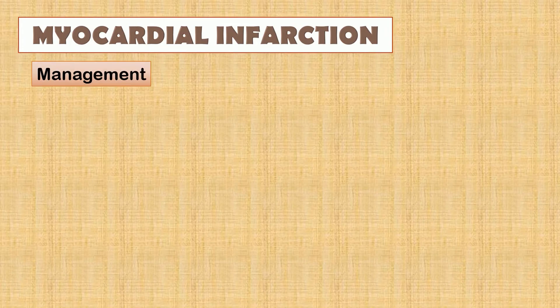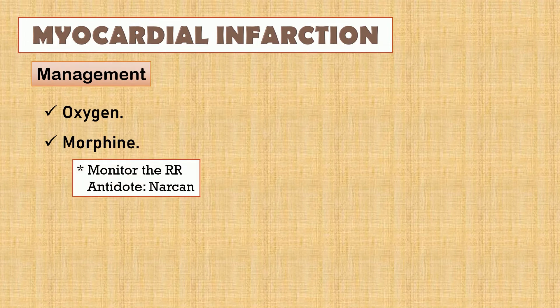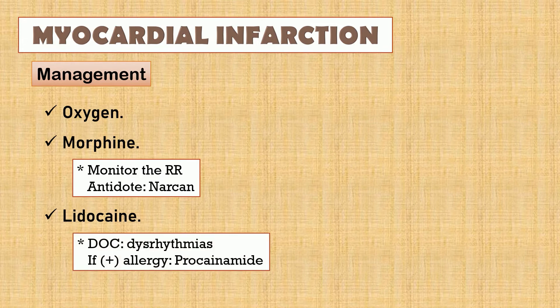Let's now proceed to management. First, oxygen administration. Then, administer morphine as ordered. Note: always check the vital signs, especially the respiratory rate, due to possible adverse effects of the medication, which is respiratory depression. Always prepare Narcan, which is the antidote for morphine toxicity. Next, lidocaine — it is the drug of choice for the presence of dysrhythmias. But if the patient has an allergy to this medication, the other option is procainamide.